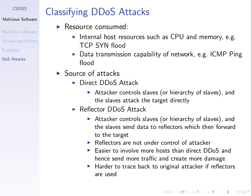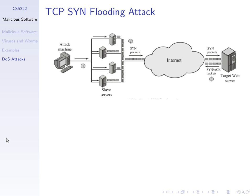The other thing we see in those two example attacks is the source of the attacks. In the TCP SYN flooding, it was a direct distributed denial of service attack. The attacker controls some slaves — or even a hierarchy of slaves — and those slaves, under the control of the attacker, directly attack the target. The slaves send the packets directly to the target.